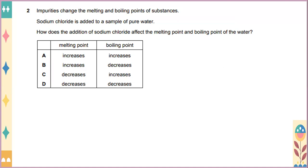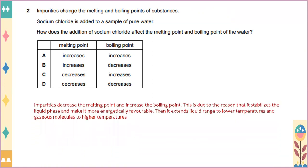Impurities change the melting and boiling points of substances. Sodium chloride is added to a sample of pure water. How does the addition of sodium chloride affect the melting point and boiling point of the water? So, impurities decrease the melting point and increase the boiling point. This is due to the reason that it stabilizes the liquid phase and makes it more energetically favorable. Then it extends liquid range to lower temperatures and gaseous molecules to higher temperatures. The answer will be C.